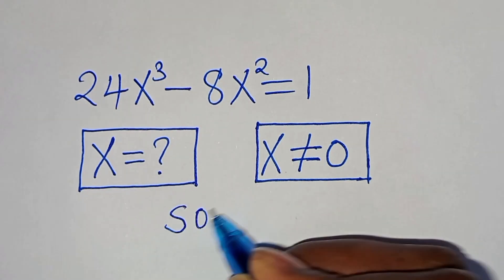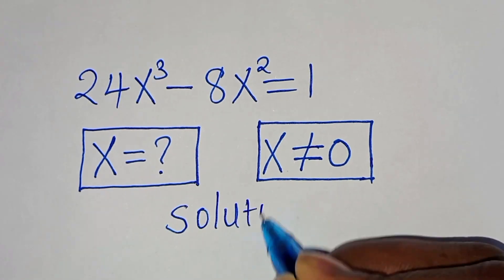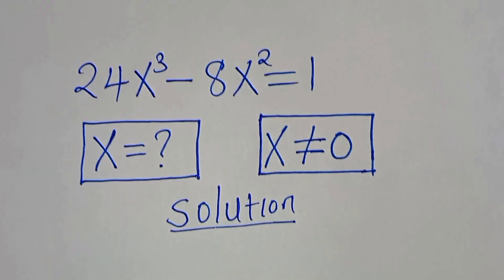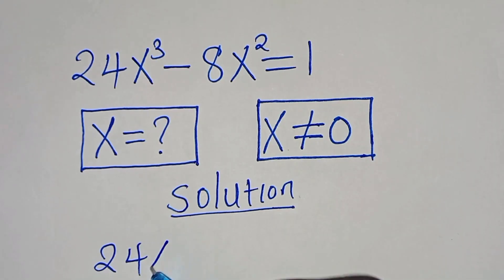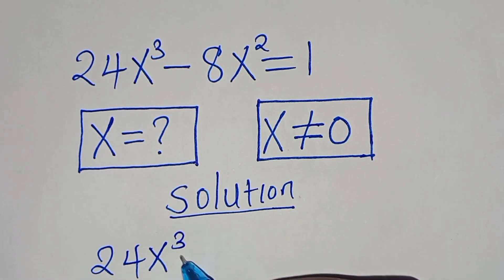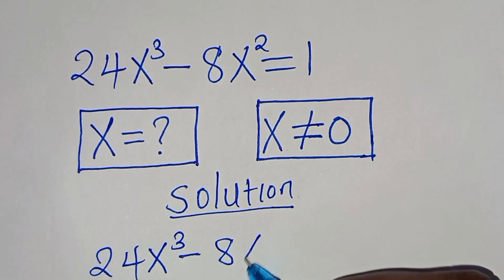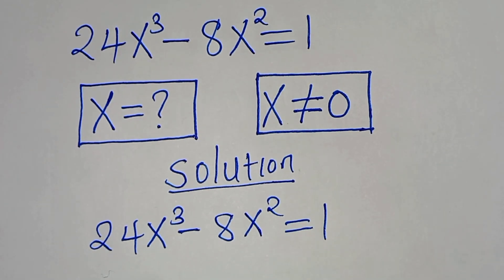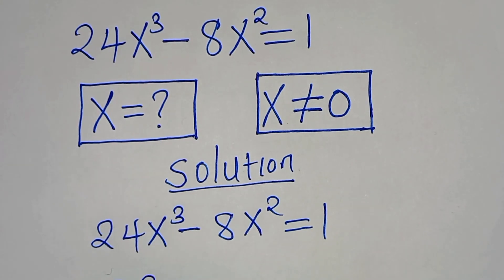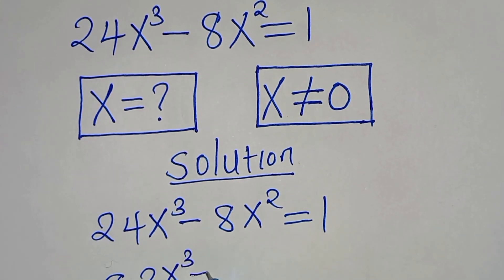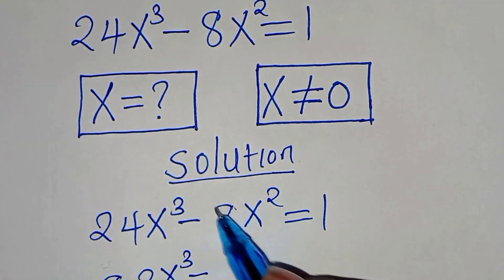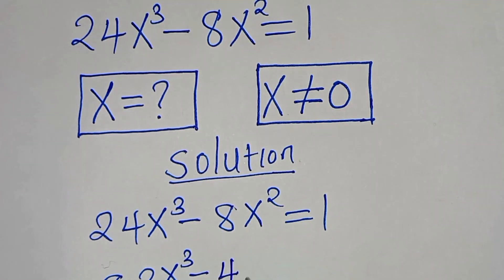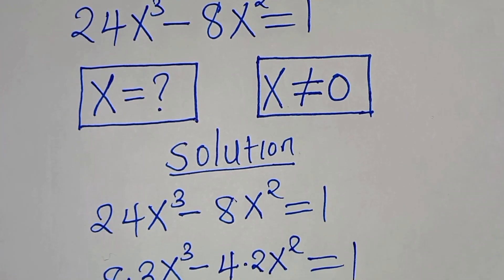So, let's present a solution from here. Now, we have 24x to the power of 3, then minus 8x to the power of 2, this is equal to 1. We can express 24 as 8 times 3, multiplying by x to the power of 3, then subtract 8 — we can express 8 as 4 multiplying by 2, then multiplying by x to the power of 2, this is equal to 1.